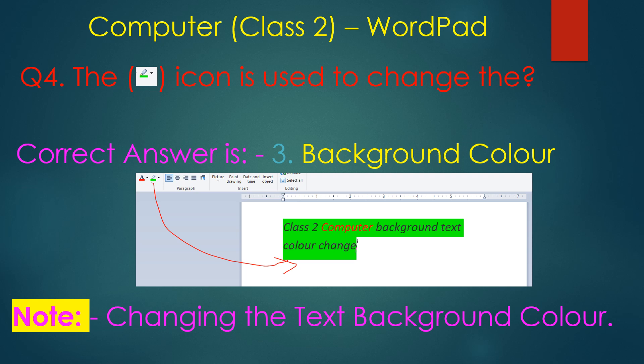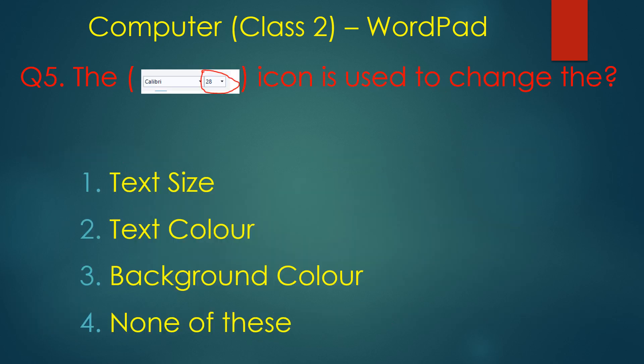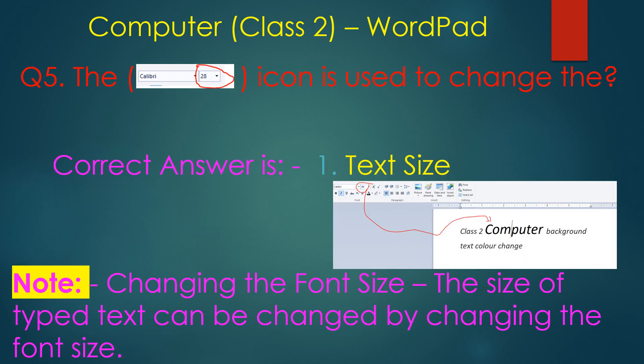This icon is used to change the background color of text. This other icon is used to change the text size. You can see the size — it starts from a number — and text size is the correct answer. I selected a word and changed the size to 48, and you can see the font size changing.